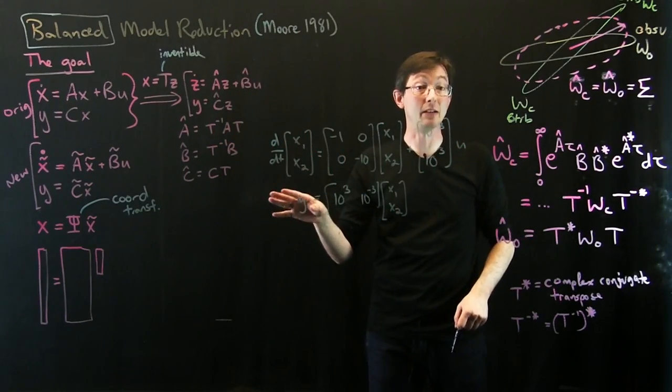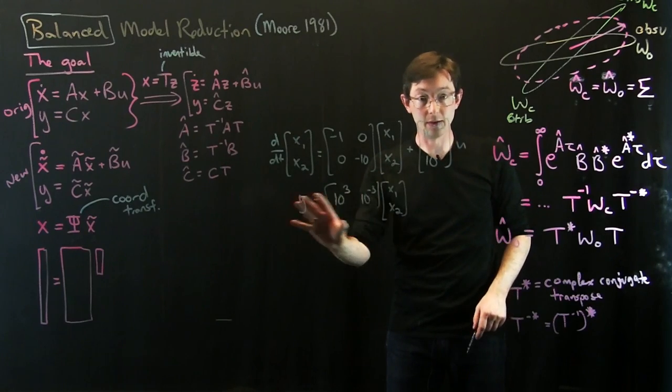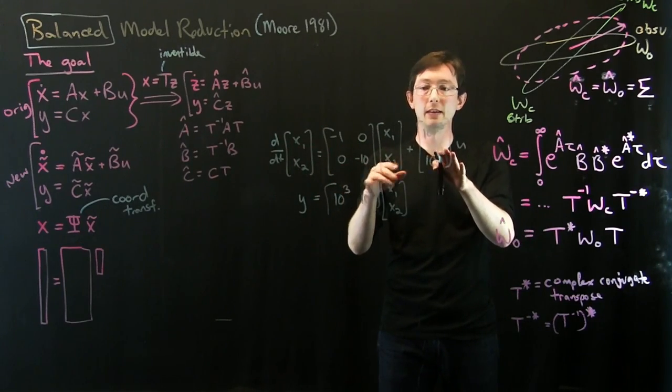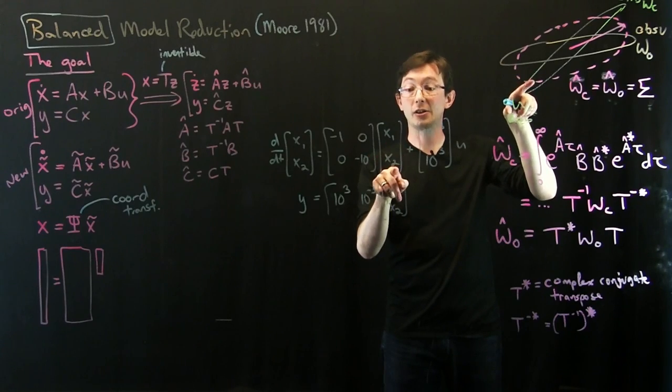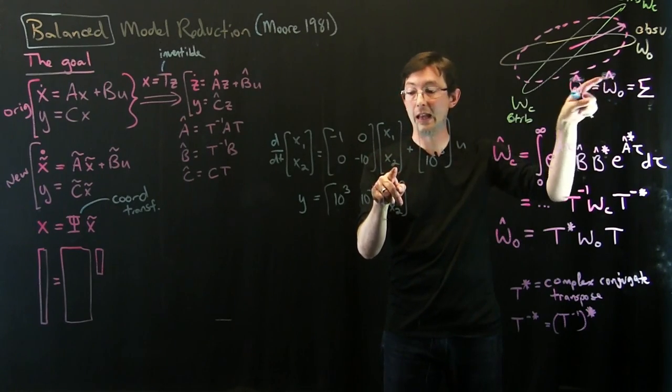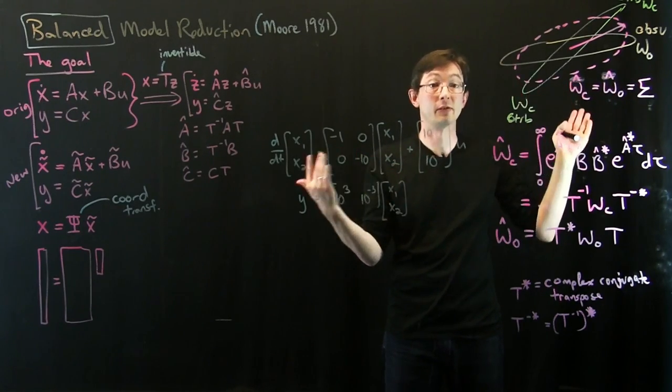So what I could do, a very simple balancing transformation. If I went through, I would find that the x1 state is, the x2 state is super controllable, and the x1 state is super observable, basically.